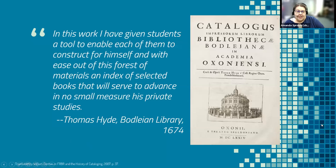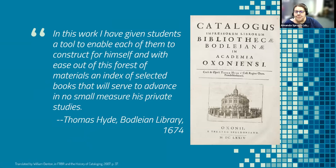One of the very first library catalogs was done by Thomas Hyde at the Bodleian — he was the Bodleian librarian. He came up with this catalog, the Catalogus Impressorum Librorum, basically a catalog for the Bodleian at Oxford University. He labored mightily and commented that in this work, he gave students a tool to enable each of them to construct for himself, out of this forest of materials, an index of selected books that will serve to advance in no small measure his private studies.